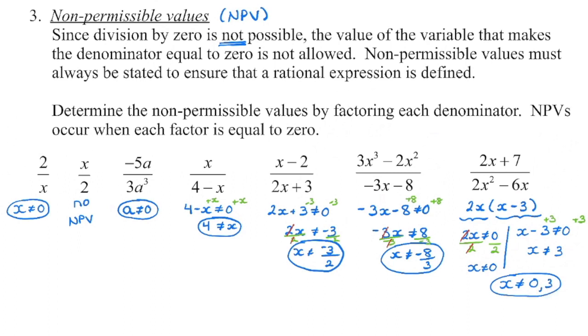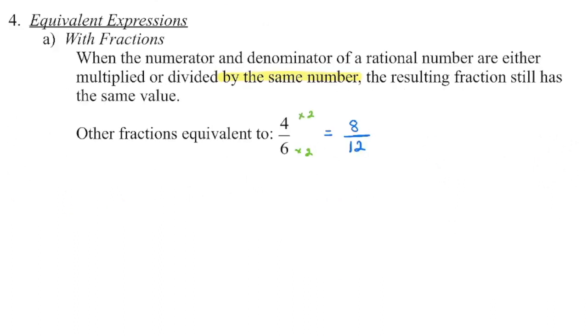Every other value is allowed or is permissible. And then the last thing we really want to understand before we get into the meat and potatoes of rationals is that of equivalency. So we know with fractions, if we multiply the numerator and denominator by the same number, we end up with an equivalent fraction. So the reason that is, is because two over two has a value of one. When I multiply by one, I'm not changing the original value. We could also divide.